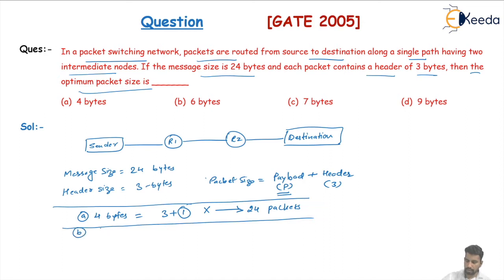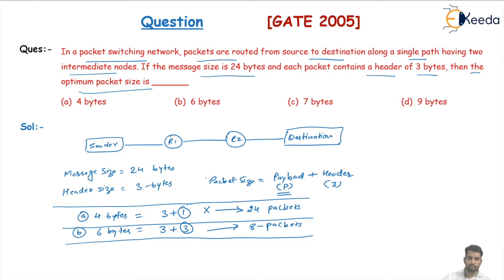Option B gives a packet size of six bytes: three bytes header and three bytes payload, requiring eight packets — still high overhead. Option C gives seven bytes: three bytes header and four bytes payload, so we need to transmit six packets.